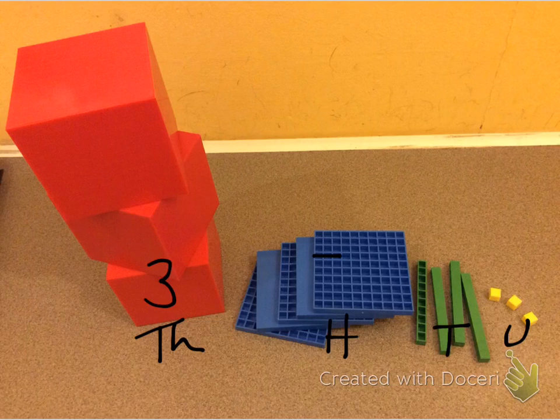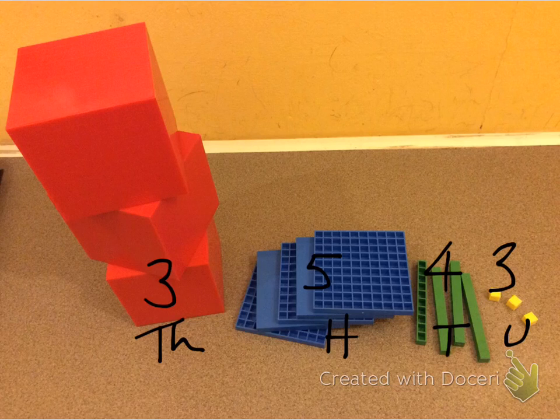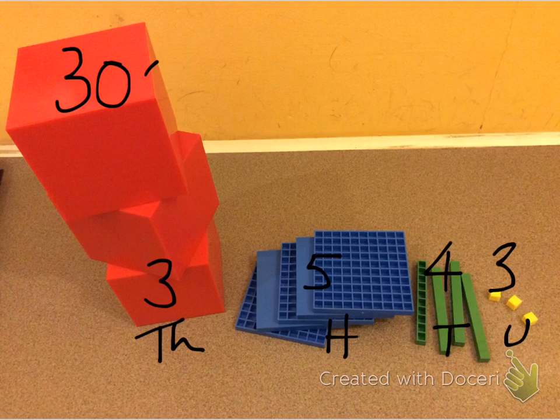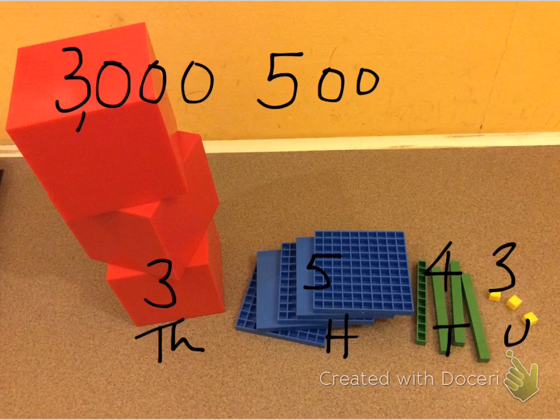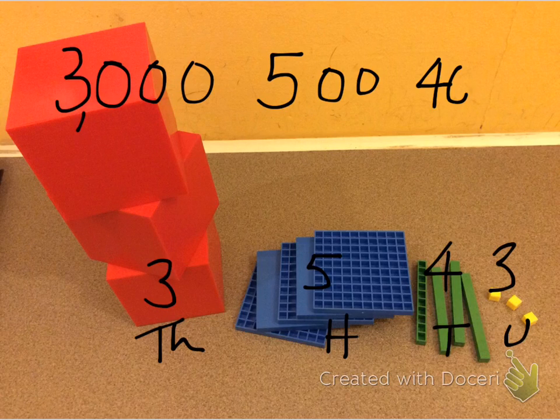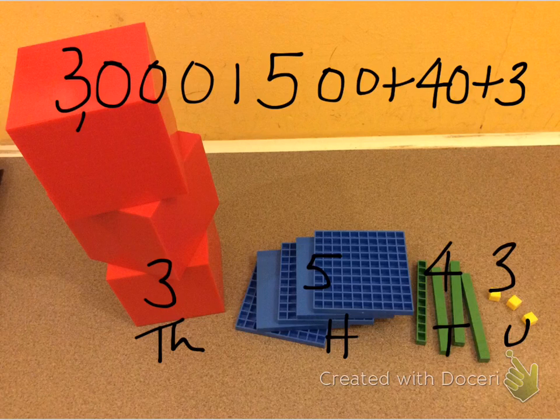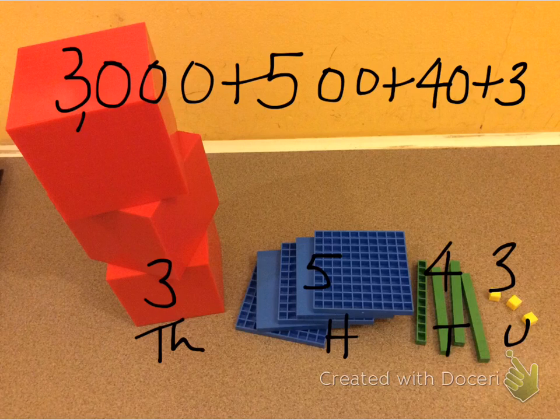Three lots of a thousand, five hundreds, four tens, and three units. To break it down we just say what each of these individual digits is worth. So for this one we put 3000. Here we've got five and it's 500. We've got four which is 40 and we've got three which is units. And then all we have to do is put adding signs to show that you add them together to make your 3543.